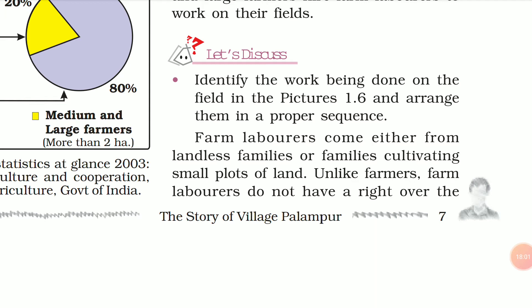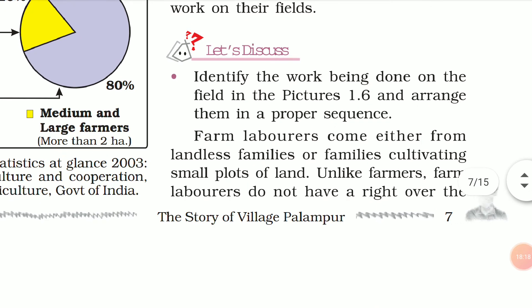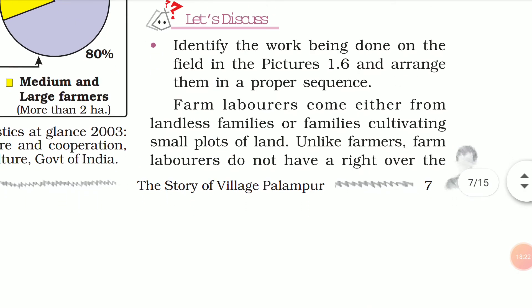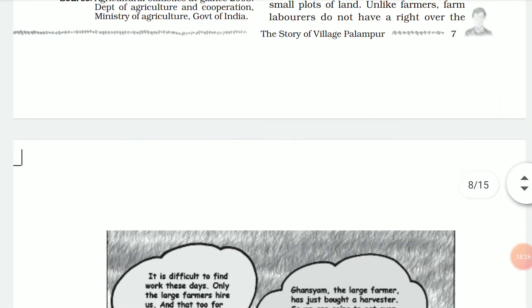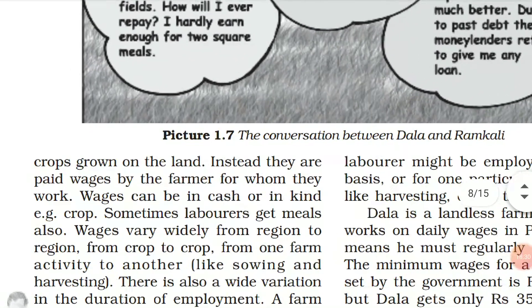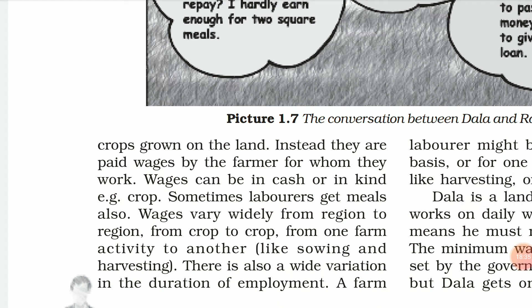Medium and large farmers hire labourers to work on their fields. Farm labourers come either from the landless families or from families cultivating very small plots of land who need additional income. Unlike farmers, farm labourers do not have any right over the crops grown on the land — the land belongs to the farmer for whom they are working.